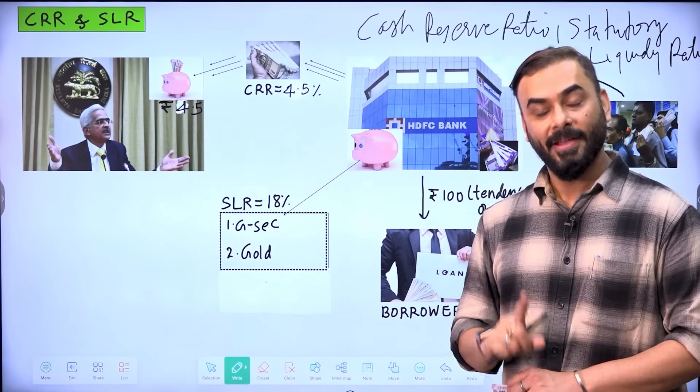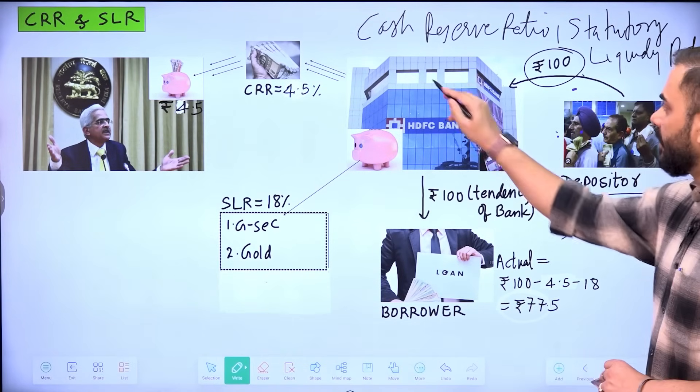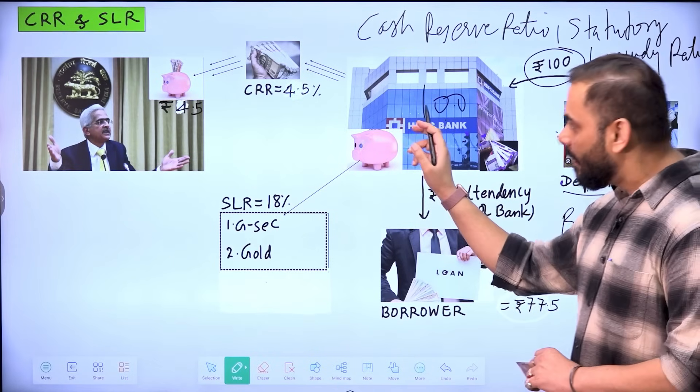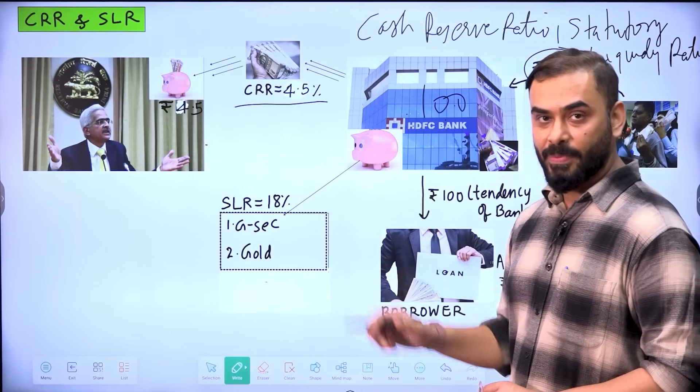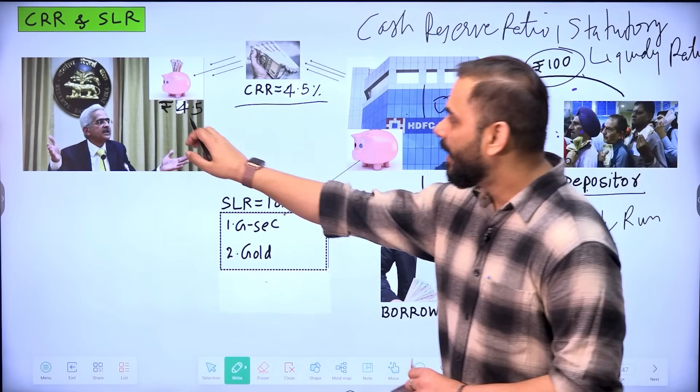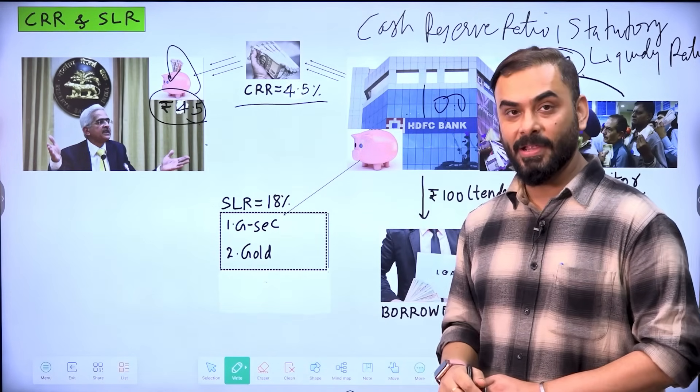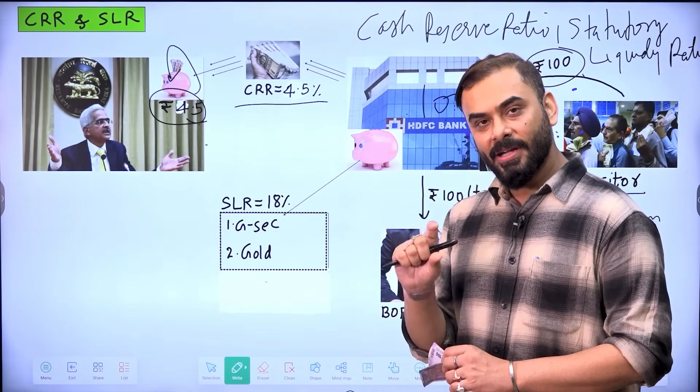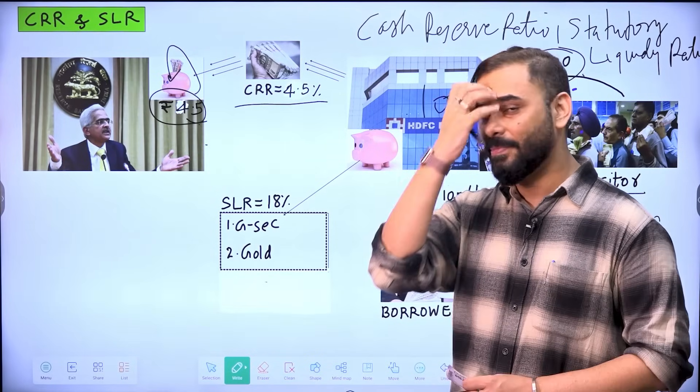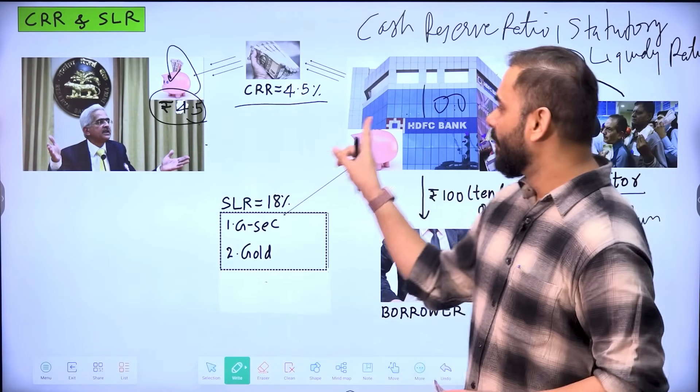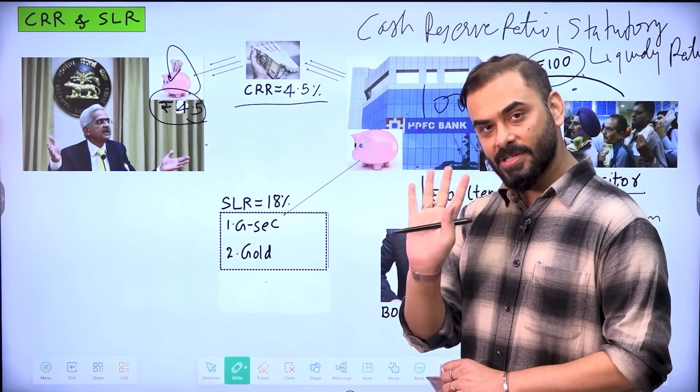So what is the rule that RBI has created in India? RBI has created two rules in India that whenever depositors deposit 100 rupees with HDFC, for example, immediately Reserve Bank of India says that HDFC, please take out 4.5% out of whatever deposits are there and give it to RBI. This 4.5% goes in the piggy bank of RBI. This is HDFC's money only, but it is kept in a piggy bank with RBI. It's like a child is getting pocket money and putting it in piggy bank. And who takes care of the piggy bank? Parents. So this 4.5 rupees out of 100 is kept with RBI. RBI does not pay any interest rate on this. RBI keeps it safe.